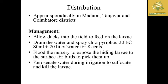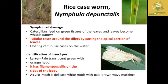Management of army worm: allow ducks in the field to feed on the larvae; drain water and spray Profenofos 80 ml plus 20 liters of water for eight cents; kill larvae by kerosening the water to cause suffocation; flood the field to expose hidden larvae so birds can pick and eat them.